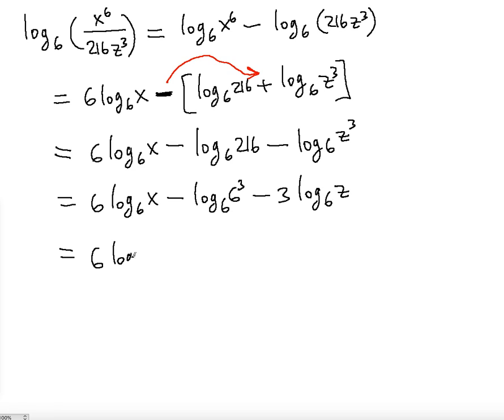Let's keep writing. We're going to have 6 log base 6 input x minus, and now here the 3 goes down because that's the power: 3 log base 6 input 6 minus 3 log base 6 input z.